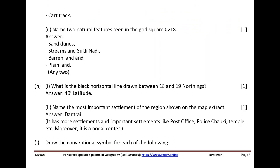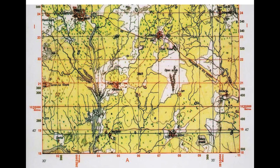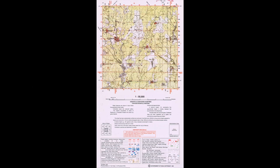What is the black horizontal line drawn between 18 and 19 northings? Answer: 40 minutes longitude. Name the most important settlement of the region shown on the map extract. Answer: Dantra.